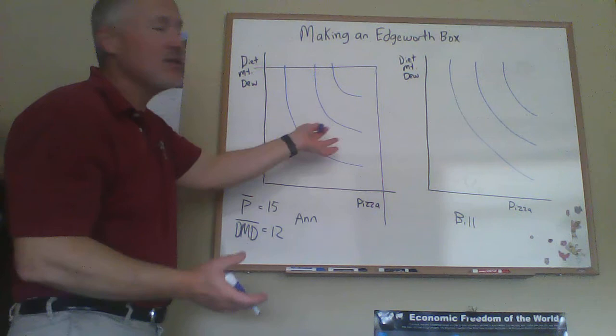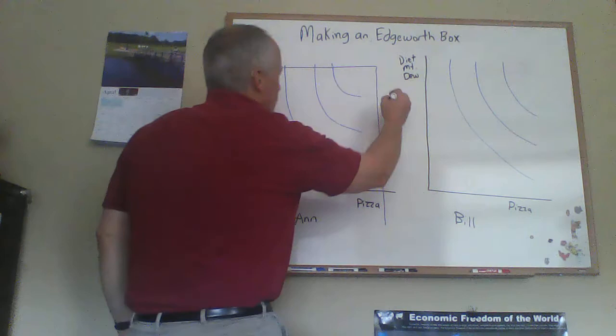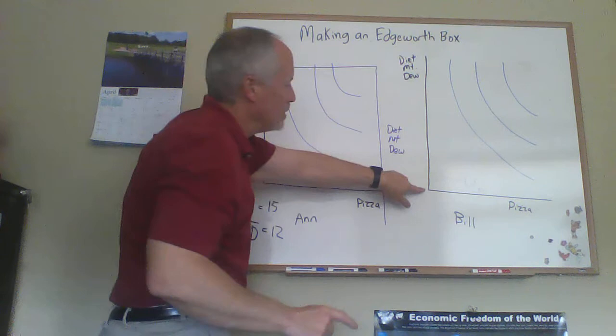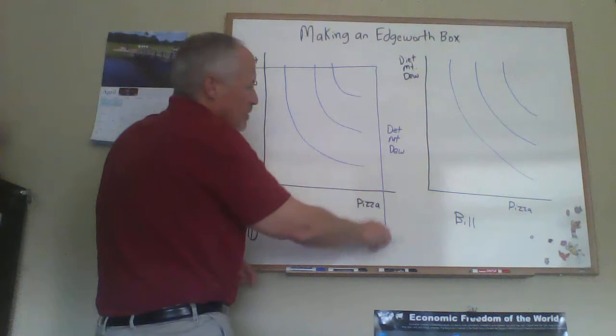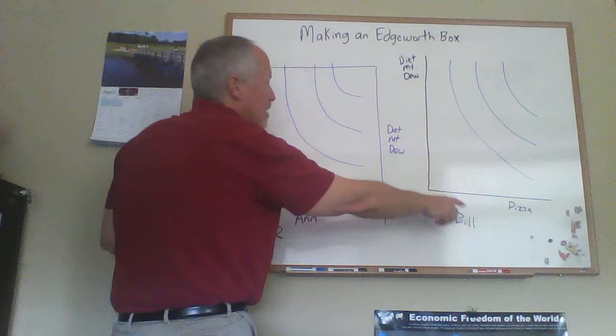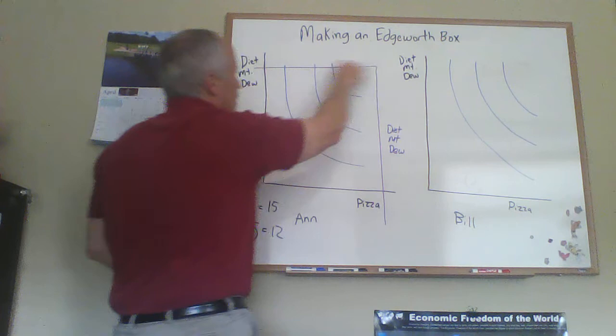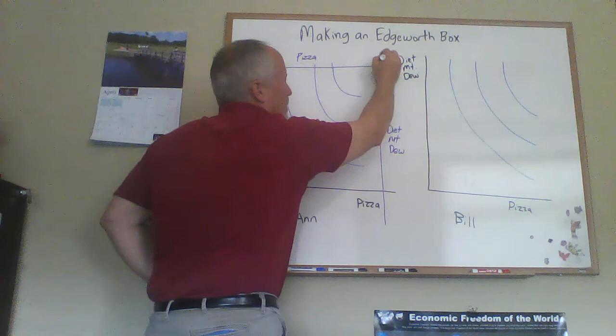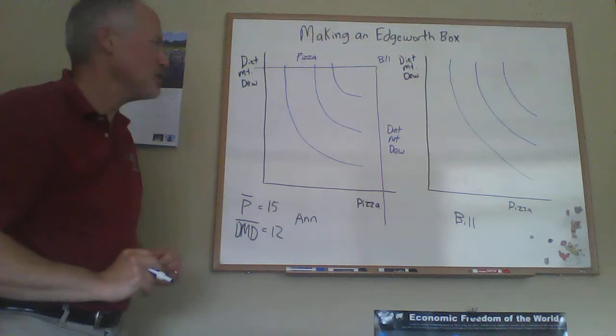Another way of thinking about it is that Bill is standing on the ceiling. With Bill standing on the ceiling, he's looking at his diagram. We put Diet Mountain Dew for Bill over here. As we've turned this over with the right angle going up, this would be the vertical axis that Bill would be looking at — Diet Mountain Dew on this axis — and then pizza on the horizontal axis. So the numbers on this axis would be Bill's, because we've flipped his graph over on his head.